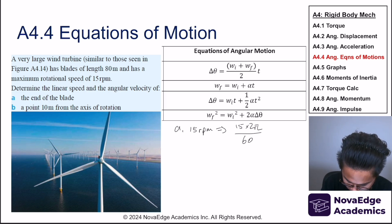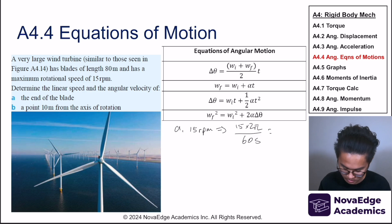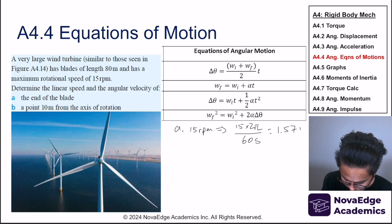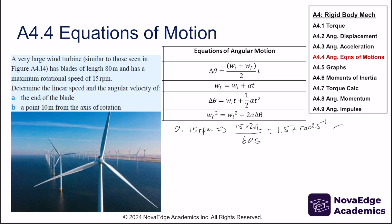For the next problem: 15 RPM equals 15 rotations per minute, which is 15×2π divided by 60 seconds = 1.57 rad/s. The linear velocity at the tip — using v = ωr — gives 125.6 meters per second.